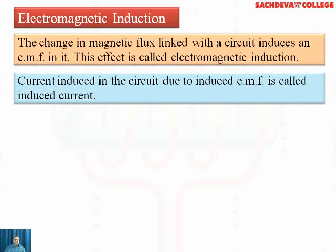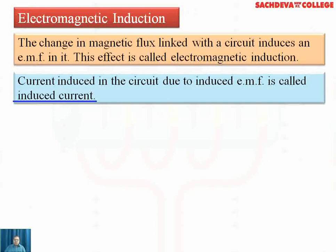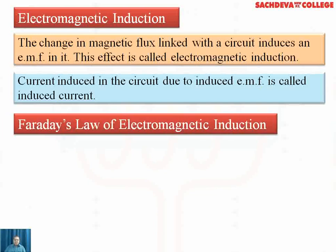It is not necessary to only say it induces an EMF — we can also say that due to change in magnetic flux, current is induced in the coil. The current induced in the circuit due to induced EMF is called induced current. After that, we come to Faraday's law of electromagnetic induction. Faraday's first law states that due to change in magnetic flux, induced current or induced EMF is developed, and this continues as long as there is a change in flux.